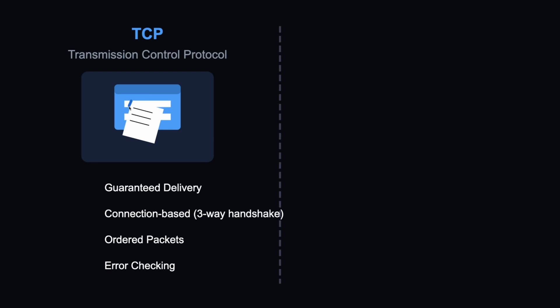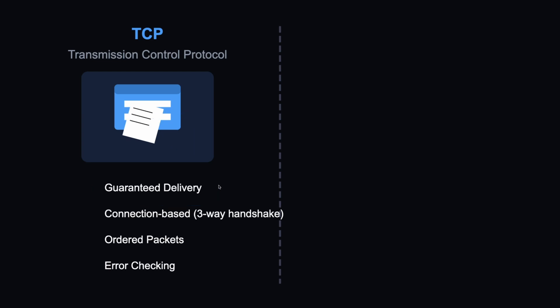When you send data over the internet you usually don't send all of it at once. If the data is large it might be divided into chunks — say three chunks — sent separately. TCP guarantees delivery of all three chunks. If one packet is lost or arrives out of order, TCP will resend or reorder it.